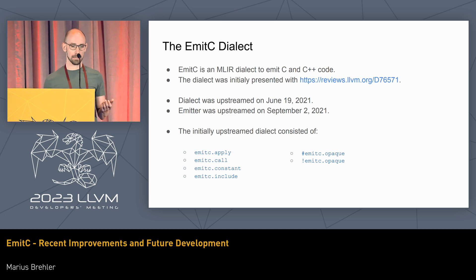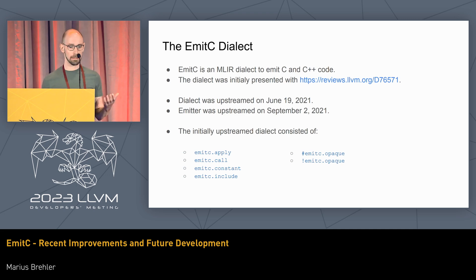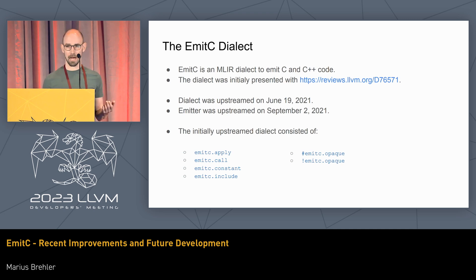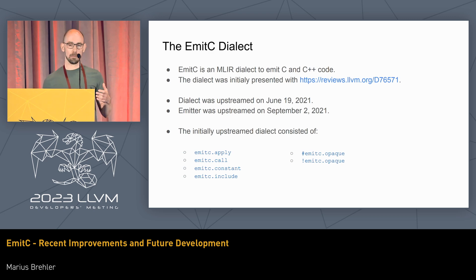The EmitC dialect is a dialect which lives in the MLIR core repository — the LLVM repository — and you can use it to emit C and C++ code. It was initially presented on Fabricator by Jacques from Google, so it was not our idea, but we picked it up and upstreamed it in June 2021. But it's not only a dialect — it's also an emitter.